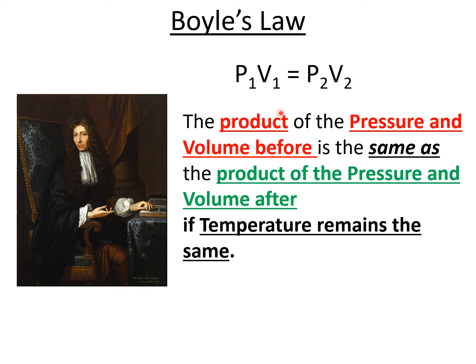So this is why we have one and two. The one represents the pressure and volume before. The two represents the pressure and volume afterwards. And this was discovered by a gentleman called Boyle, so that's why we've named it after him. And remember, for this to be true, we have to keep the temperature the same.